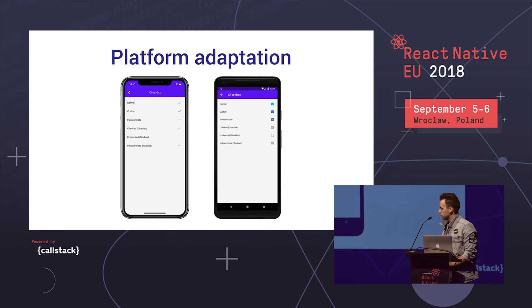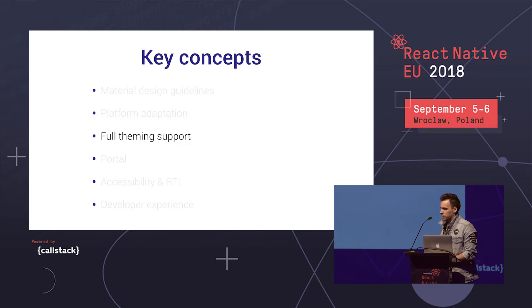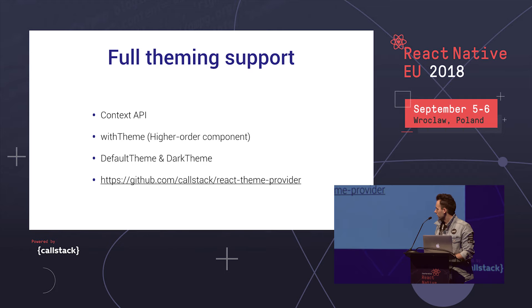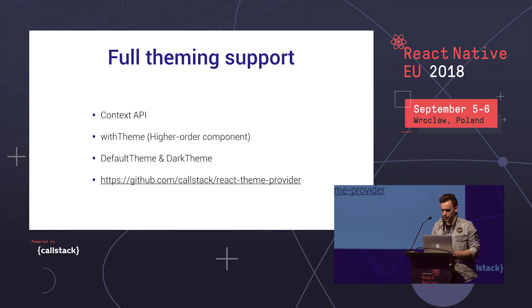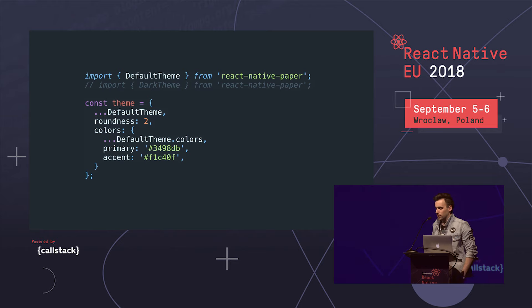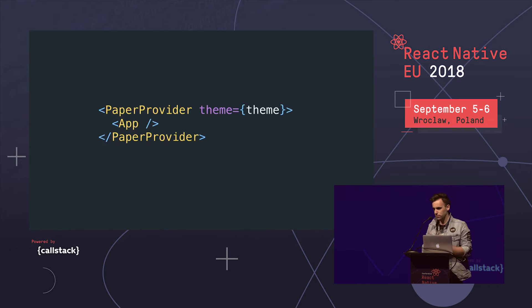On Android there's not much to say, but on iOS you get the back button, and if you have one action the title is centered; if you have more, the title moves to the left — as the guide specifies. There are also other components like checkboxes, buttons, and switches, with all these subtle differences covered. For example, there's an indeterminate state for checkbox which is new in Material 2.0. Another key concept is full theming support, which we've been working on since the beginning of Paper. We extracted it to a React theme provider, and you can use it in React Native apps or even React web apps.